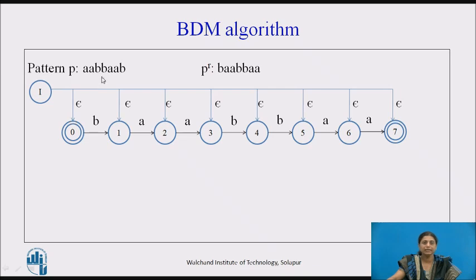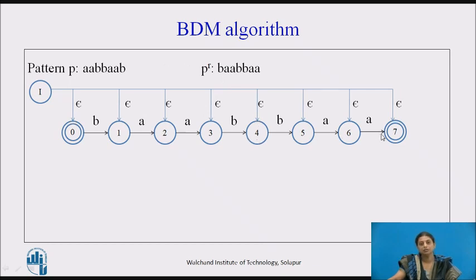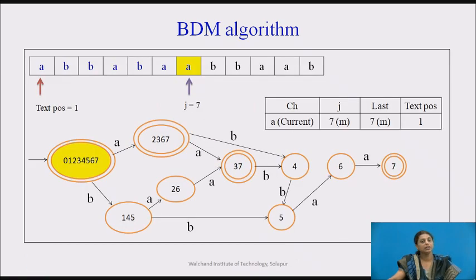We have taken the pattern 'aabbaab' and the reverse string is 'baabbaa'. This is the non-deterministic automata with null transitions — at any stage we can accept a suffix using a null transition. For example, the suffix 'aabbaa' can be accepted starting from the initial state. We then convert this to the resultant deterministic automata for the reverse pattern.